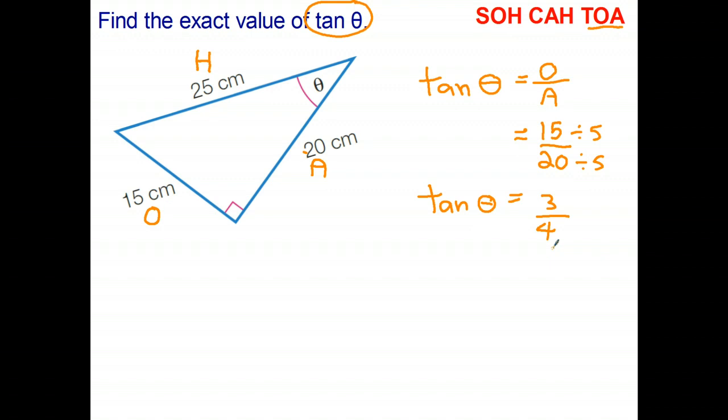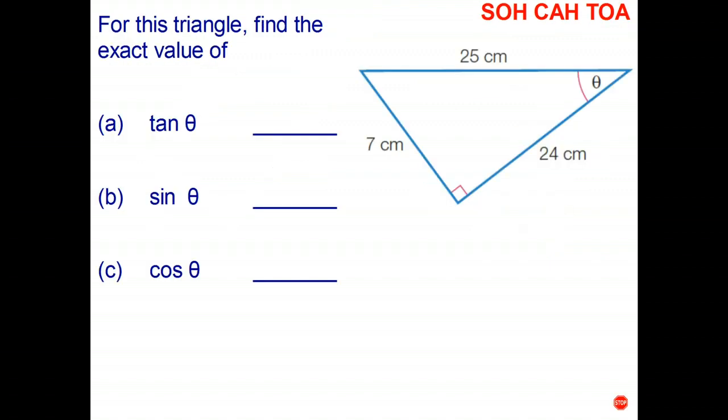So I could actually write that in simplified form: the tangent of the angle is 3 quarters, and that's the answer. Okay, let's have a look at the next question: let's find the exact values of each of these ratios for this particular triangle. So what do you think the first thing I'm going to do is?